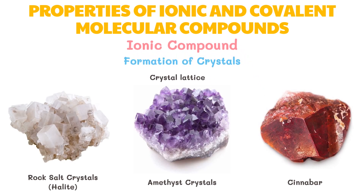The ionic bond formed between the cations and anions is very strong. The ions are arranged in a regular geometric structure called a crystal lattice, and different ionic compounds have different crystal forms. Naturally occurring ionic crystals are found in rocks and minerals — they are mixed with transition metal elements to give rise to brilliant colors.